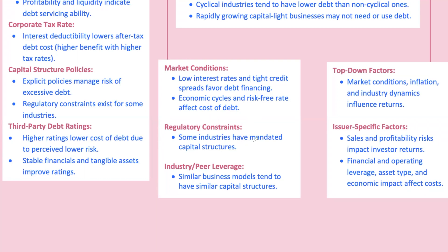Regulatory constraints also matter. Some industries are more heavily regulated, limiting the amount of debt a company can safely use. Banks, for instance, are required to maintain certain capital ratios — regulators like the Federal Reserve require banks to hold a minimum amount of capital, which restricts how much they can leverage. Additionally, industry norms influence decisions: if everyone in your industry uses a certain level of debt, you might feel pressure to do the same. In the airline industry, companies typically operate with high leverage because aircraft can be financed through debt, though the cyclicality of the industry also means they must be cautious about over-leveraging.